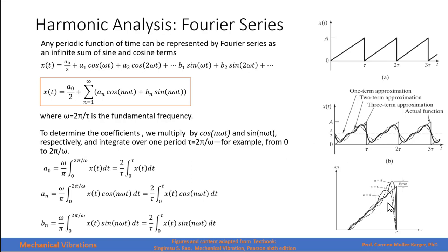We have what is called the Gibbs phenomenon: when a periodic function with a discontinuity is represented by a Fourier series, an anomalous overshoot can be observed at the peak. Even though we increase the number of terms, we will never be able to perfectly represent the sharp corner. When we increase the number of functions, the approximation improves everywhere except at the discontinuity.